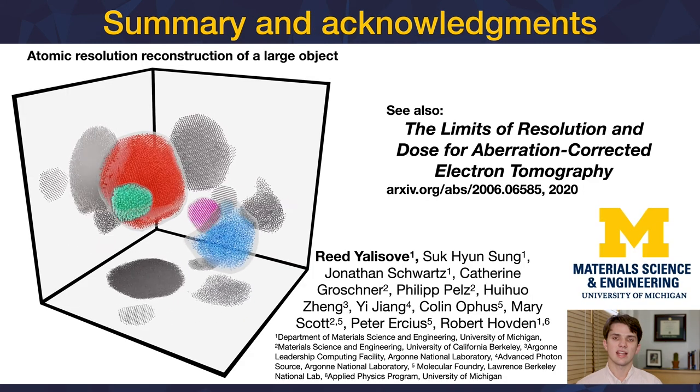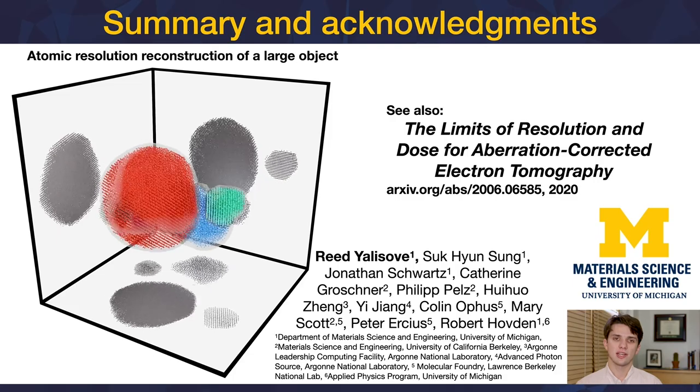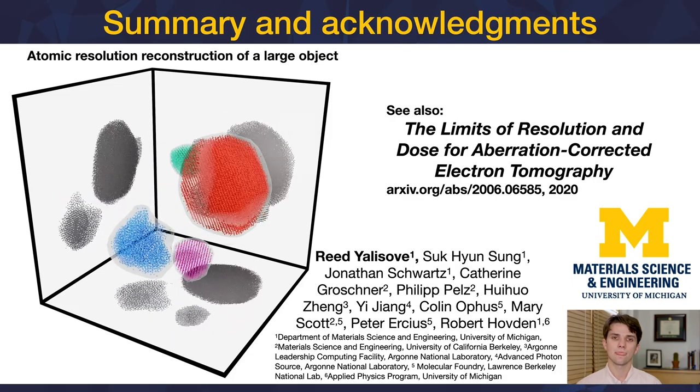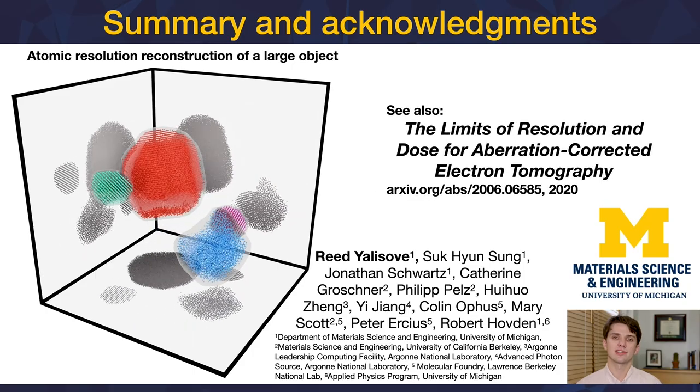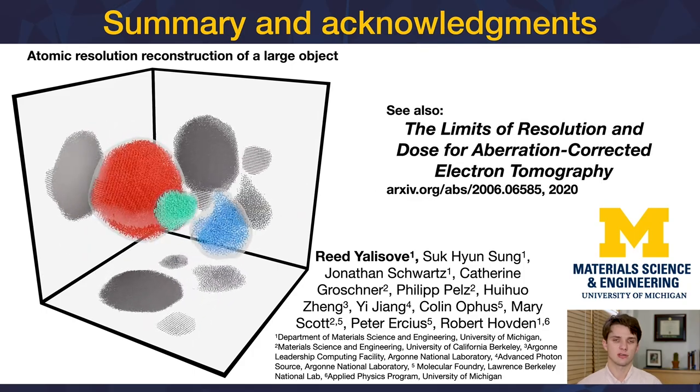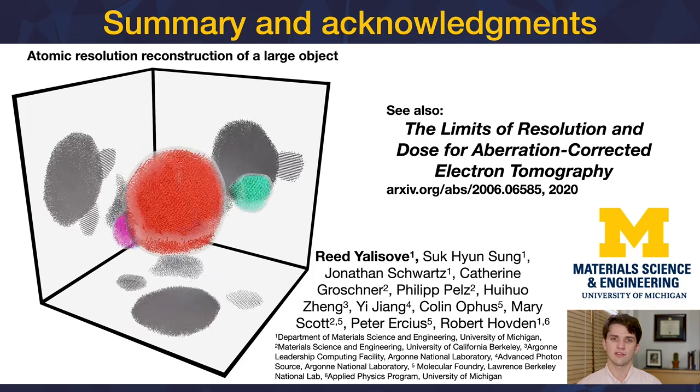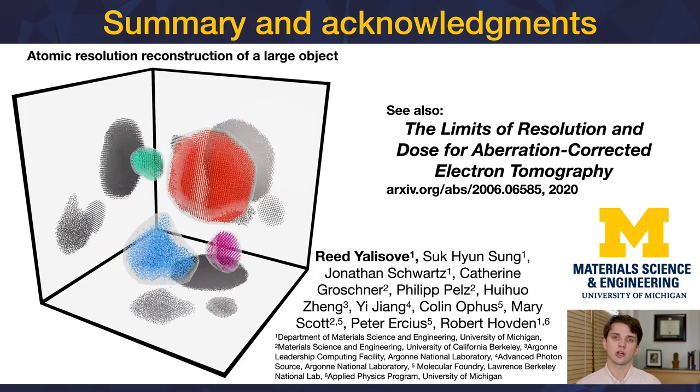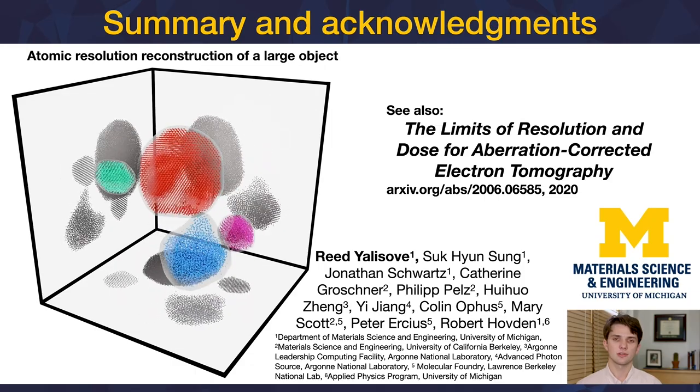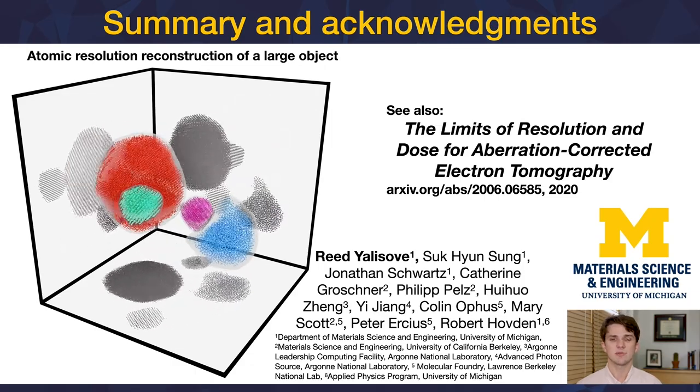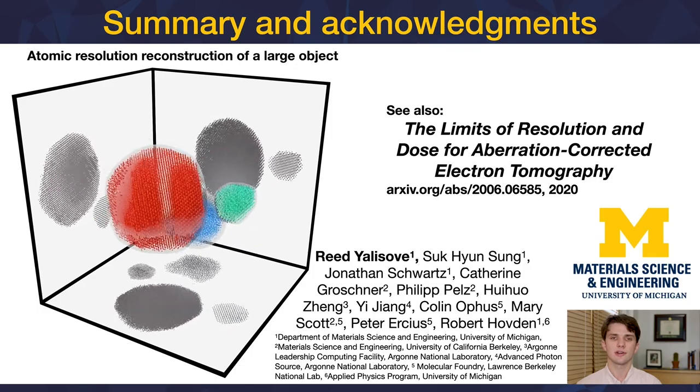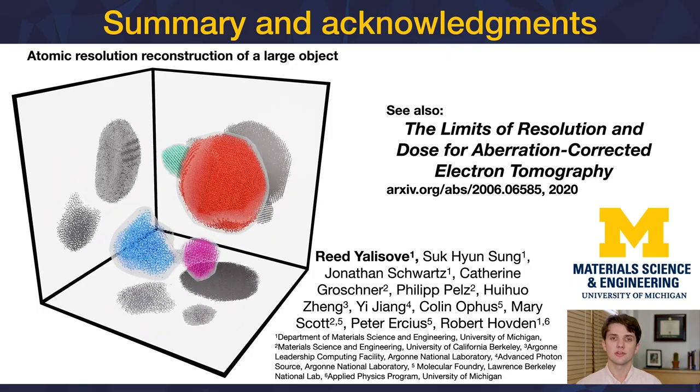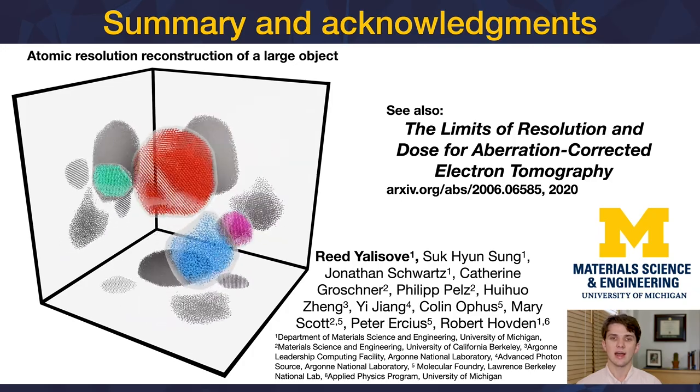In this talk, we've discussed aberration-corrected tomography, which collects a through-focal series of images at each tilt in a tomography tilt series. This work builds on our paper titled, The Limits of Resolution and Dose for Aberration-Corrected Electron Tomography, which is available via archive. We then demonstrated aberration-corrected tomography using large-scale multislice simulations. This atomic resolution reconstruction spanning 15 nanometers in three dimensions shows that there is no sampling limit for aberration-corrected tomography. We can reconstruct objects of any size at atomic resolution.